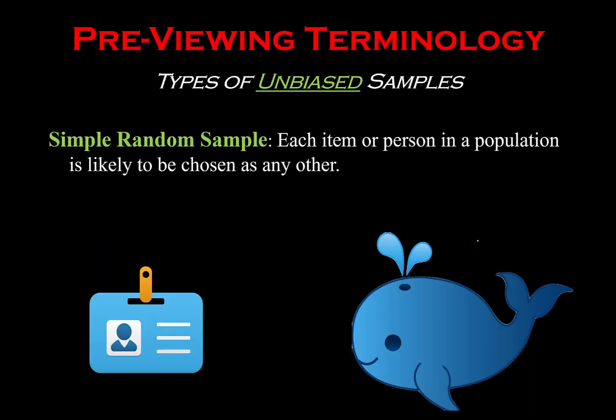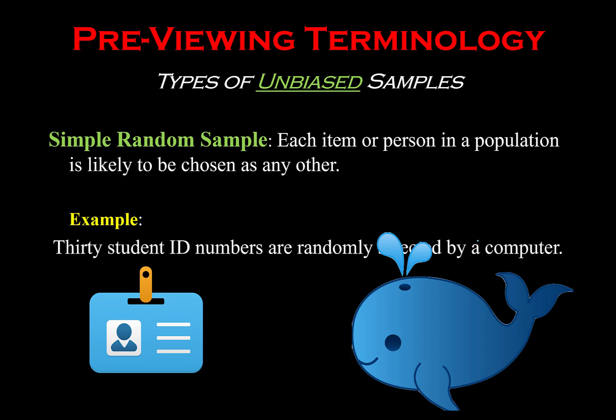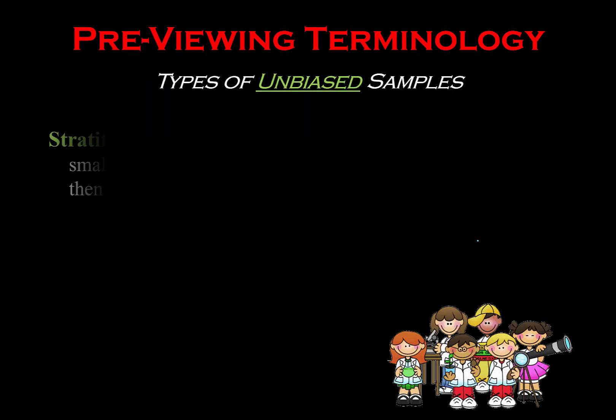There are several different types of unbiased sampling methods. The first is a simple random sample, where everyone gets some sort of identifying mark such as a number or letter, and then we randomly select them. Maybe a computer program randomly selects 100 names from a list, or we put all the names in a hat and select from it. Everyone has an equal chance of being selected.